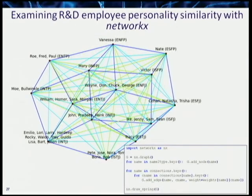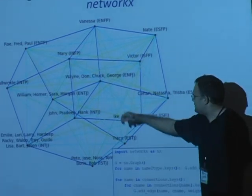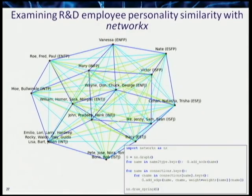A personal favorite — and NetworkX was mentioned a lot at this conference, so I had to include this slide. Each employee in our R&D group took the Myers-Briggs Type Indicator. The names have been changed to protect people — Bullwinkle and Homer don't actually work for LifeTech. Each node is a Myers-Briggs type, and the lines are weighted by how many letters two people have in common: blue lines indicate three symbols in common, light blue two in common, and yellow one in common. This was set up and plotted in very few lines of code, and we use it to troubleshoot R&D team dynamics.